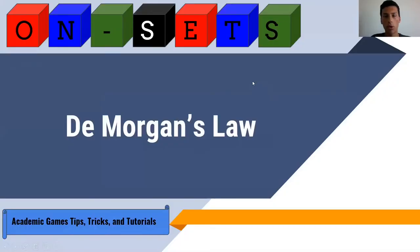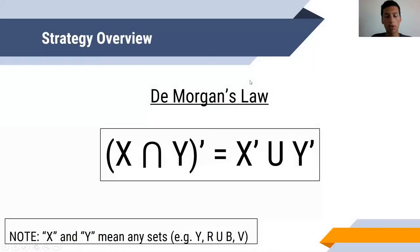De Morgan's Law is a strong and easy-to-learn strategy in odd sets. De Morgan's Law states that if you have any two sets X and Y, and those sets can be any phrases like yellow, red, or blue, and universe for example, the phrase X intersection Y in parentheses prime equals X prime union Y prime.